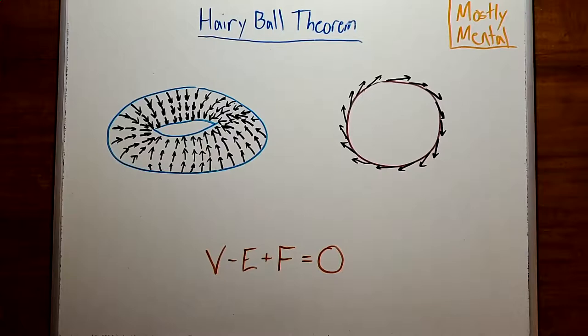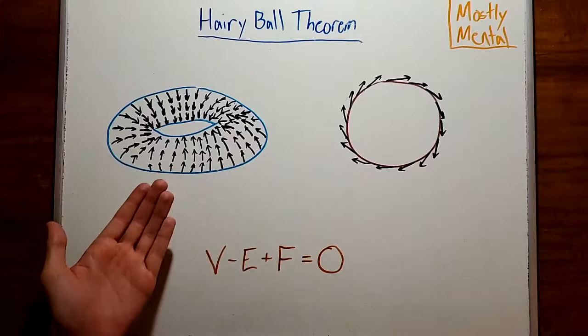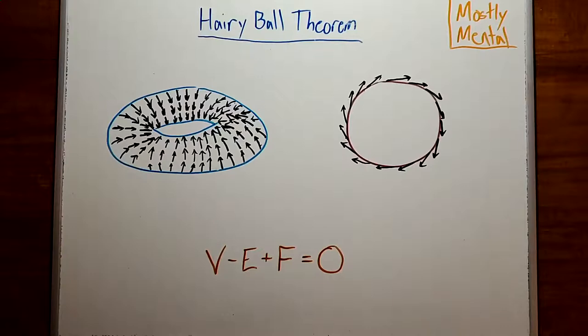Now, we're mathematicians, so the natural question is, how do we generalize this? We could try looking at other surfaces. For instance, if instead of a hairy ball, we had a hairy donut, would we still get a cowlick? Well, no. Here's a torus with a vector field with no normal vectors in it.